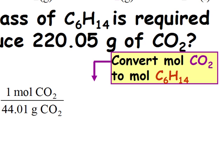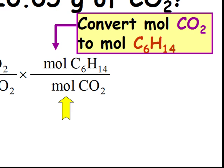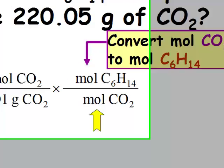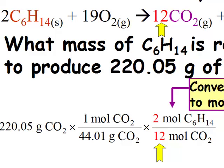Next, we need to convert moles of CO2 to moles of C6H14. When converting moles of one substance to moles of another, we use the coefficients in the balanced equation. We multiply by the conversion factor moles of C6H14 over moles of CO2, where the coefficient 2 is written in front of the moles of C6H14 and the coefficient 12 is written in front of the CO2. The unit moles of CO2 now cancels.